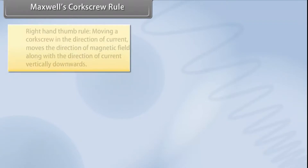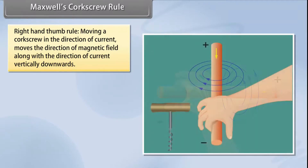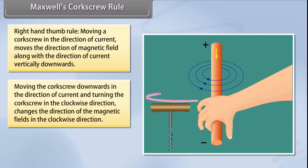Maxwell's Corkscrew Rule, also known as the Right Hand Thumb Rule, defines that moving a corkscrew in the direction of current moves the direction of magnetic field along with the direction of current vertically downwards. If we move the corkscrew downwards in the direction of current and the handle is turned in the clockwise direction, then the direction of the magnetic field is also in the clockwise direction.